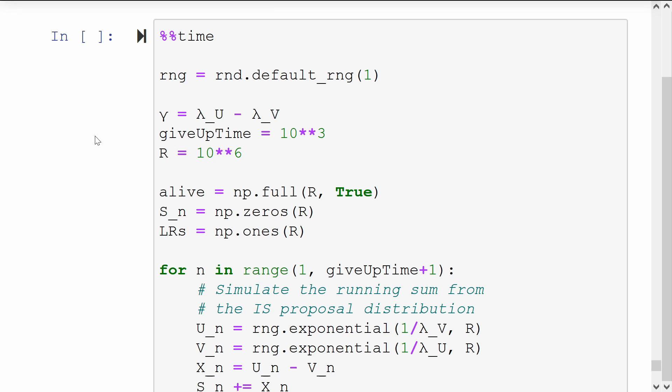I'll have alive be the vector of true or false which will keep track of which of the R simulations hasn't hit bankruptcy yet. S_n will be identical to before, and LRs will be the likelihood ratio for each of the estimates.